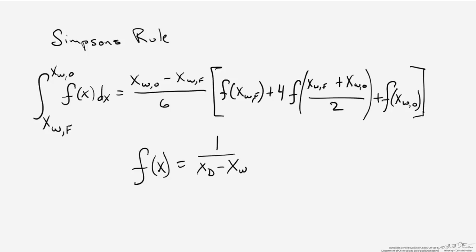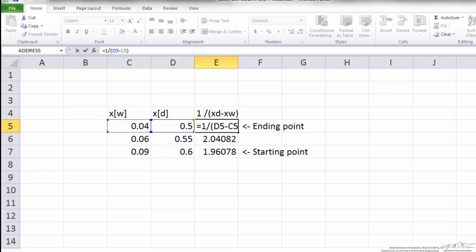Let's go back to Excel to do that. I've created a new column in Excel that takes 1 divided by the distillate composition minus the reboiler composition (xD - xW) and calculates that for each of these three points.